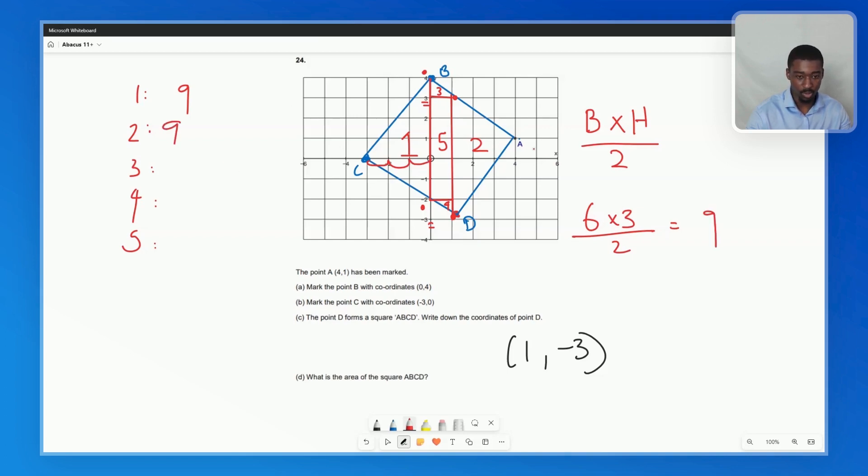In this case, the base is 1, the height is 1. So therefore, we have 1 times 1 over 2, which is a half. So we have 0.5 and 0.5.